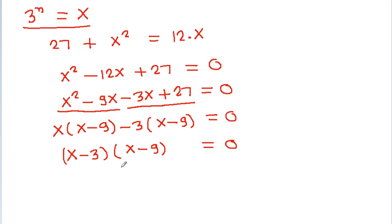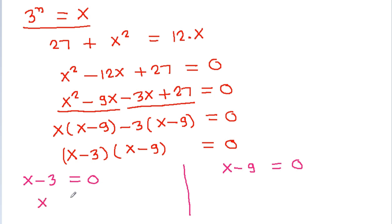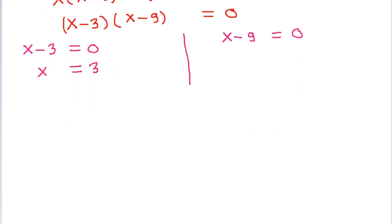Either x minus 3 equals 0 or x minus 9 equals 0. From the first case, x equals 3, and since x is 3 power n, we get 3 power n equals 3 power 1, so n equals 1.